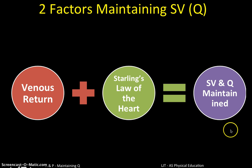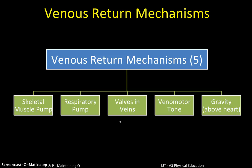Specifically, to maintain blood being ejected from the heart, we're going to look at venous return and Starling's Law of the Heart, which links to how powerfully the heart contracts. These are the five mechanisms by which we can return blood to the heart — they help us get blood, often up against gravity, in our veins back to the heart so we can maintain stroke volume and therefore cardiac output.